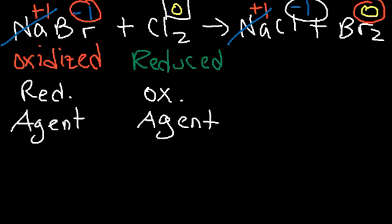Most elemental metals, like zinc and magnesium, tend to form reducing agents — they are good reducing agents. Most nonmetals in their elemental form, like Cl2, bromine, and oxygen O2, usually form good oxidizing agents. In fact, the word "oxidizing agent" comes from oxygen.